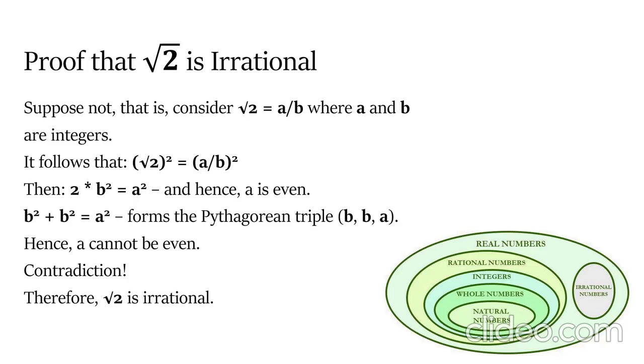So this shows that we have a Pythagorean triple b, b, and a, where a is the hypotenuse. However, we have a is even. But by previous hypotheses and the lemma, a cannot be even.